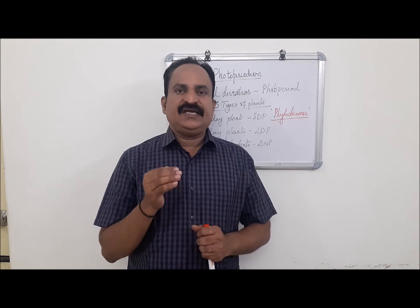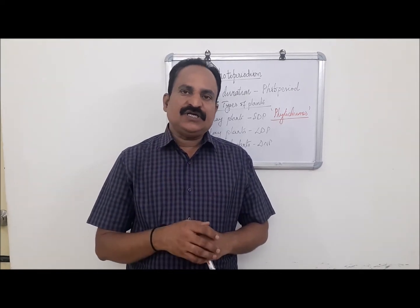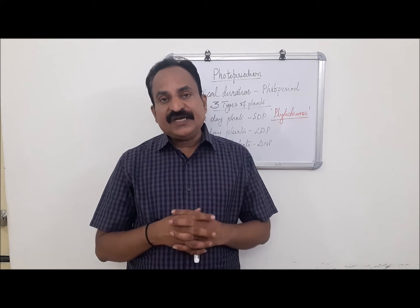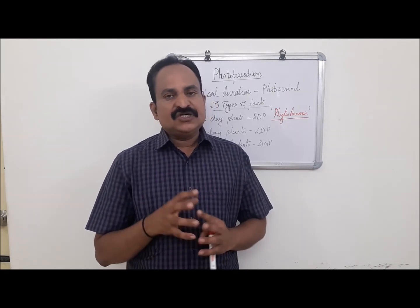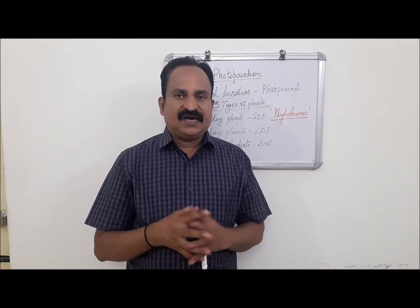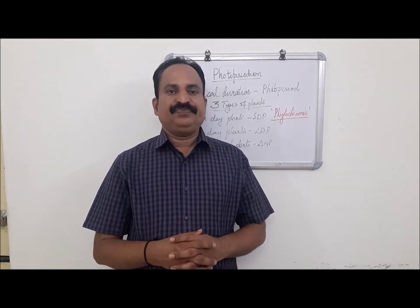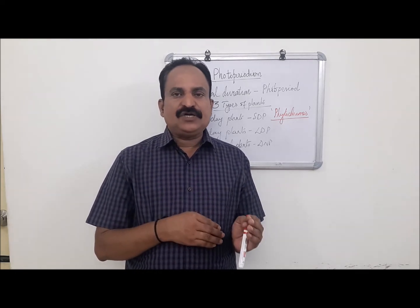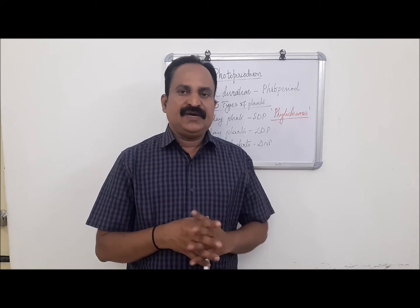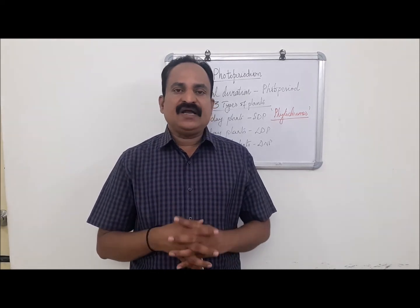During the critical dark period in short day plants, Pfr gradually changes to Pr, resulting in flowering. A brief exposure with red light will convert Pr back into Pfr, thus inhibiting flowering. The reversal of this inhibitory effect by subsequent far red light (730 to 735 nanometers) is because Pfr, after absorbing far red light, is converted back into Pr. Prolongation of the critical light period or interruption of the dark period by red light in long day plants results in further accumulation of Pfr, thus stimulating flowering.